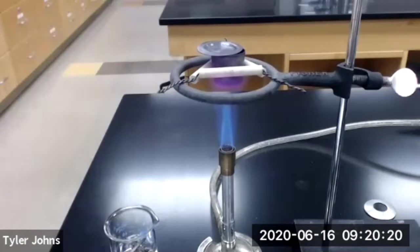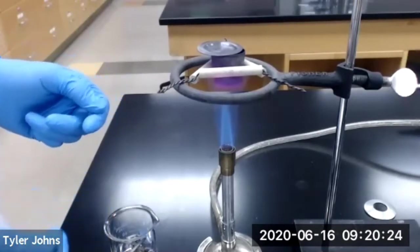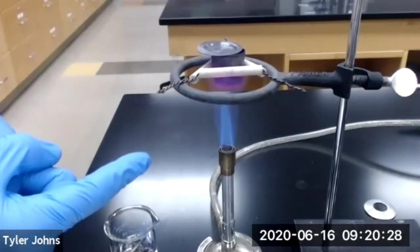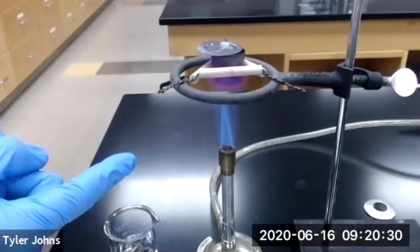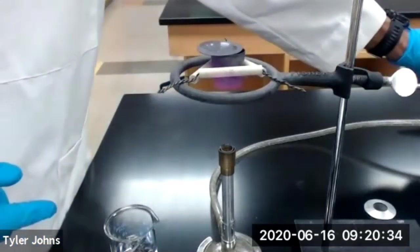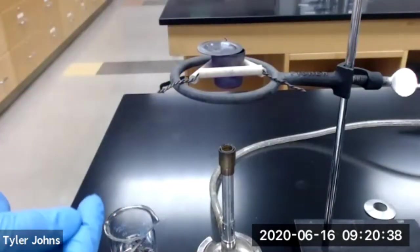At this point our crucible has been heating for approximately five minutes and you can see that the bottom of our crucible is now glowing red hot. So we're going to turn off our Bunsen burner. And we're going to let our crucible and cover cool to room temperature.